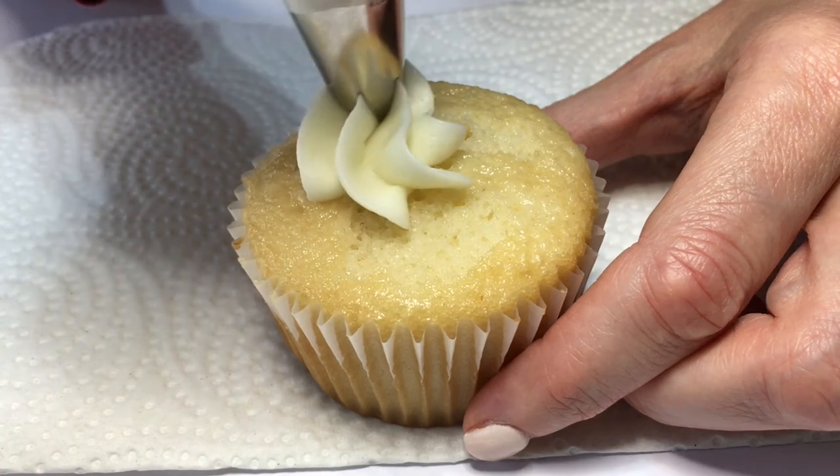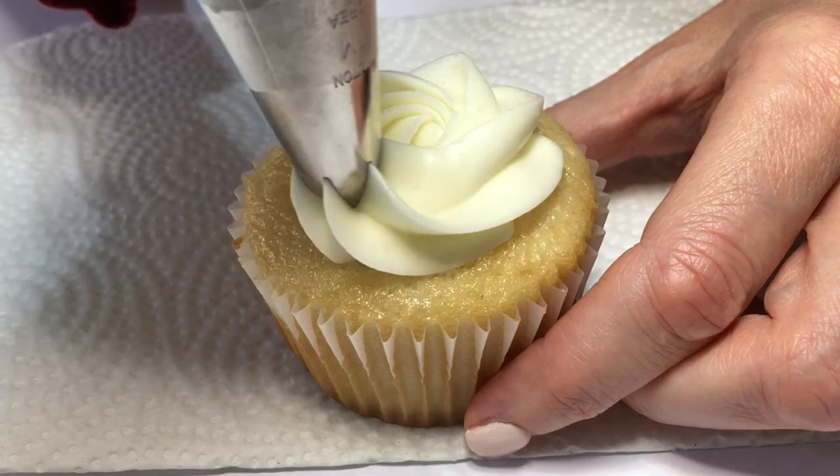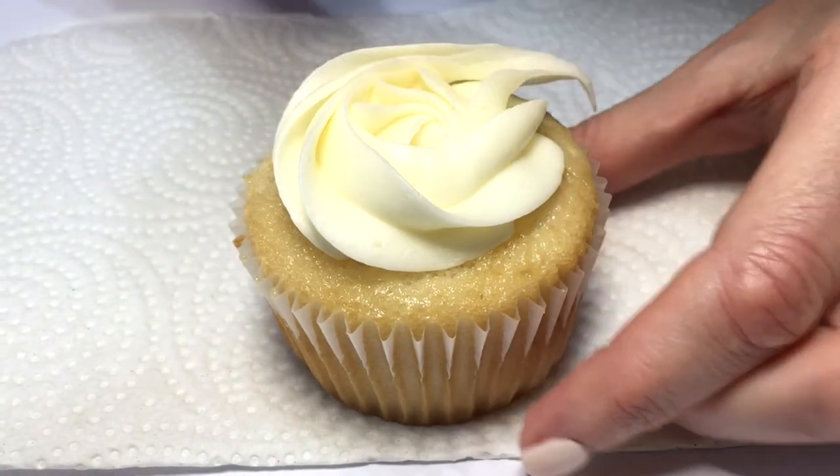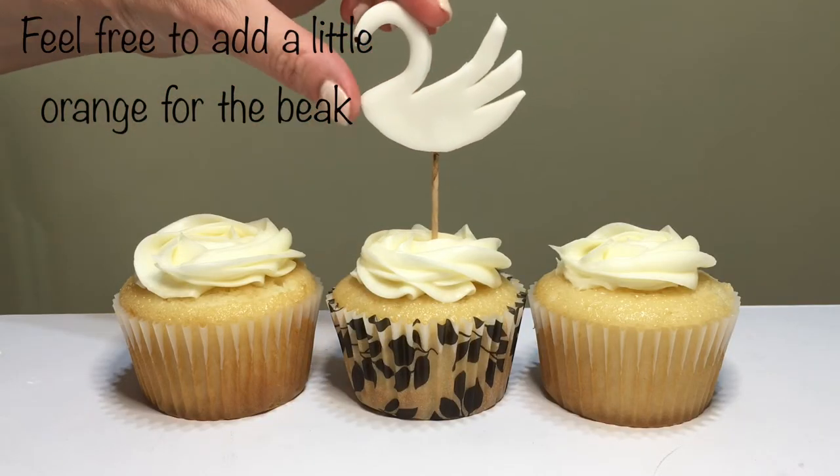For my cupcakes, I'm using a cake mix. For my frosting, I'm using this one that I recently tested. It's a star tip as well. Using my Wilton 1M, making a small swirl in the center with a bit of cupcake showing on the edges. I love that look.